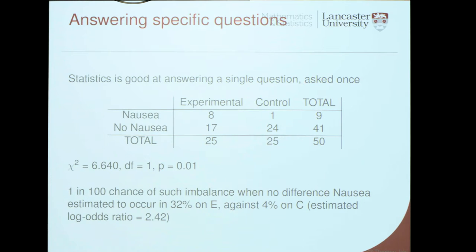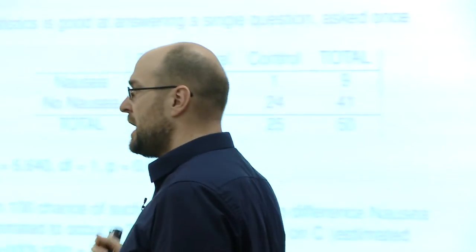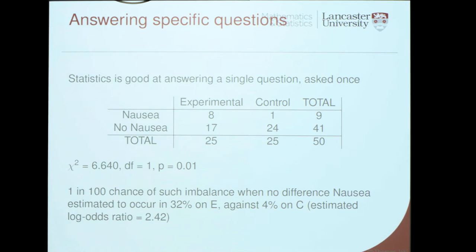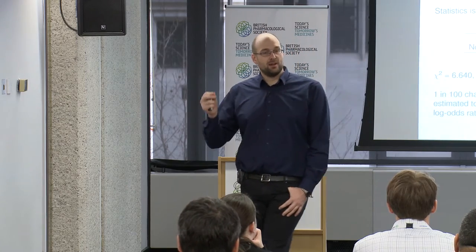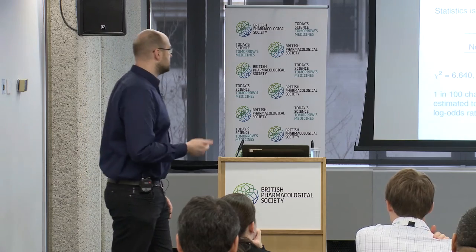So what is statistics good at? Statistics is very good at answering a single question asked once. For example, if I'm asking whether there is an association between my experimental treatment and a control treatment on nausea, and these are my data that I have observed, I can do a chi-square test, find a p-value, find an odds ratio, find a confidence interval, and conclude that there is only a one in a hundred chance that such an imbalance in nausea is occurring by chance if there is no difference between the two treatments.